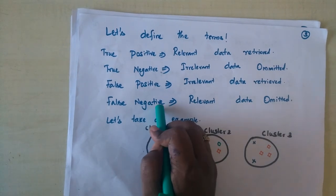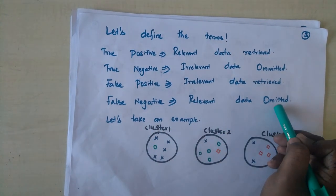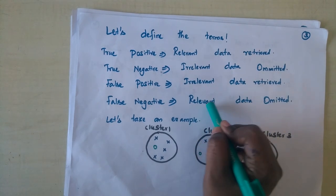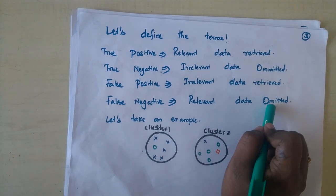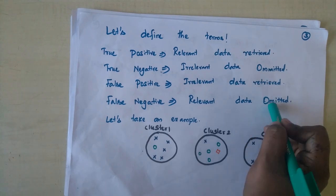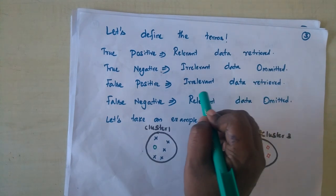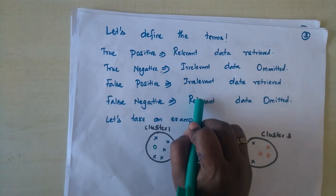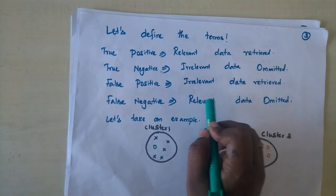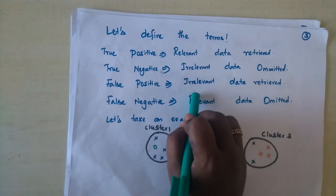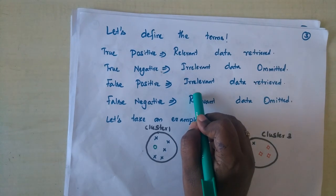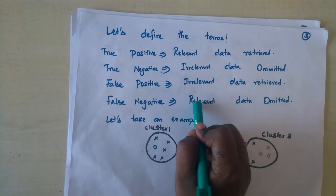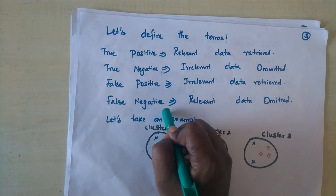False negative means relevant data is omitted. If we have a sports category cluster and a sports document waiting to enter it, but for some reason it was found dissimilar to the other data points and got omitted — it did not get into the cluster where it was supposed to be. That is also an error. That is what false negative means.